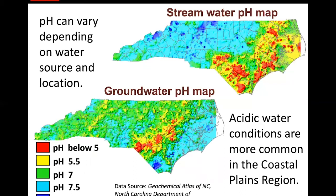Think about where you source your water from for preparing your pesticide mixtures. The North Carolina Department of Environmental Quality has updated state maps that report the relative pH levels in stream water and groundwater. The coastal region tends to have more acidic water while the mountain region tends to have more basic water. The source of your spray water and where your farm is located can make a difference in your spray water quality.